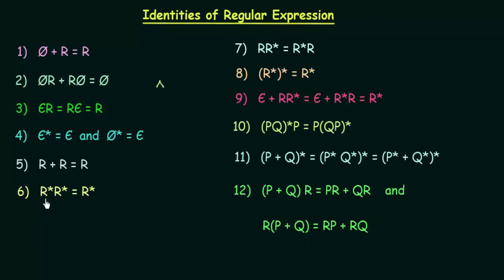The sixth identity says r*·r* = r*. This means that if you perform the concatenation of the closure of the same regular expression r with itself, then you get the closure of that regular expression as the result.